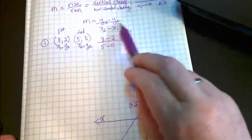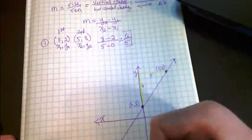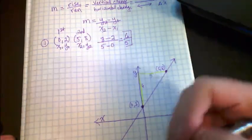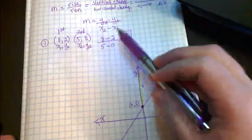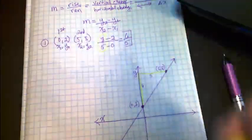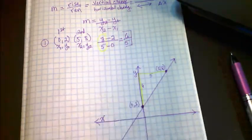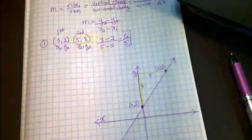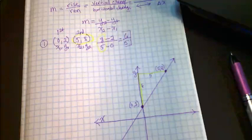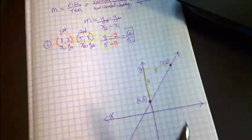Now if this x sub 2, y sub 2, all of that stuff confuses you, I just want to show you it really doesn't matter what order they go in. What matters is that you keep your x, y pair together when you put them in the equation. For instance, these are lined up above each other and below each other in the slope formula because they're part of this ordered pair.